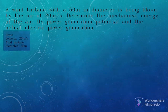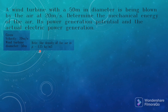The given values in this problem are the velocity and the diameter. Note that the density of air is 1.25 kg/m³. We have to find the mechanical energy of the air, the power generation potential, and the actual electric power generation.